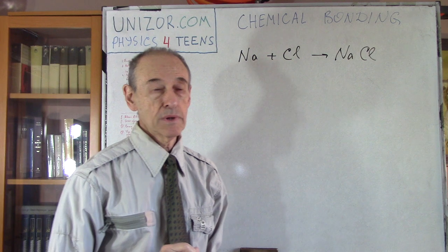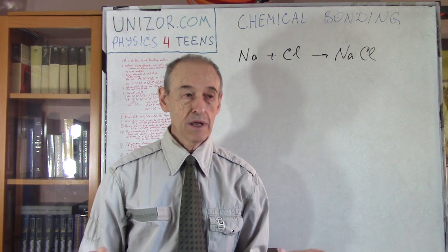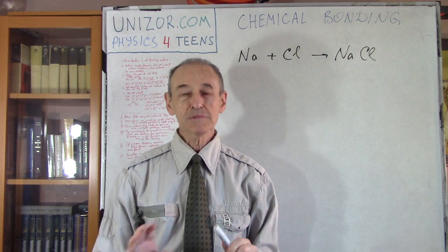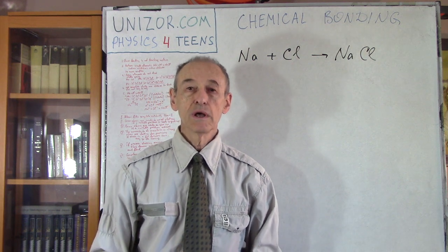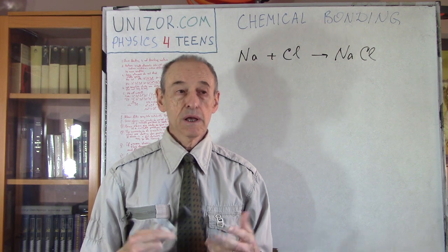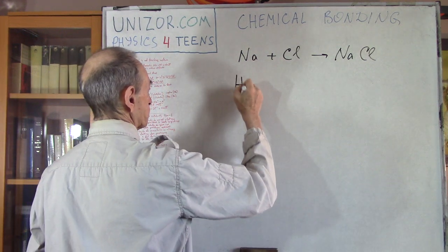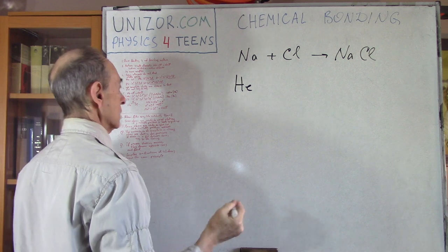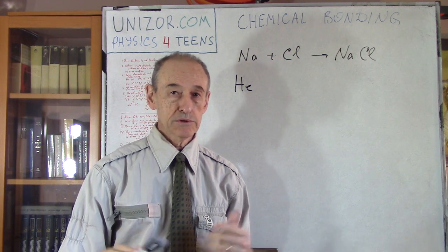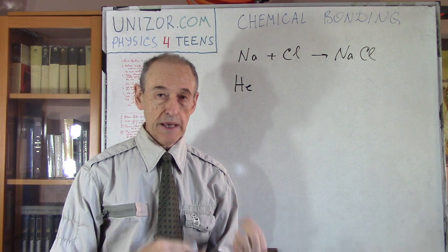Before that, I'd like to talk about cases when atoms do not want to interact with each other. There are certain atoms which are very difficult — maybe possible under extreme circumstances — but generally not willing to get into any chemical bonding. As examples, we will consider so-called noble gases. The first noble gas is helium, and to explain why it's not willing to bond, we go back to the electron structure of helium.